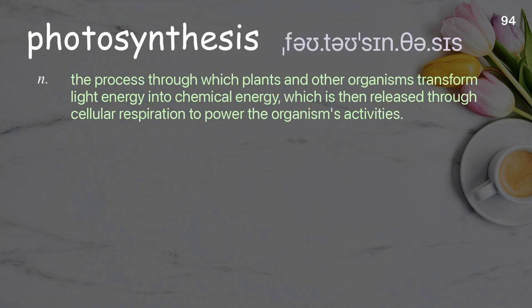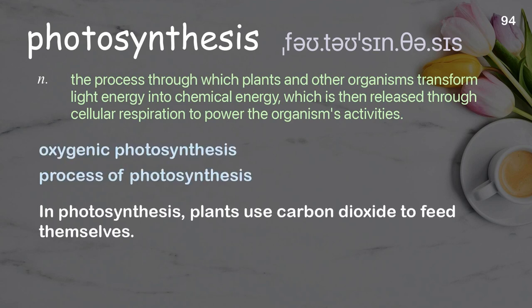Photosynthesis: the process through which plants and other organisms transform light energy into chemical energy, which is then released through cellular respiration to power the organism's activities. Examples: oxygenic photosynthesis, process of photosynthesis. In photosynthesis, plants use carbon dioxide to feed themselves.